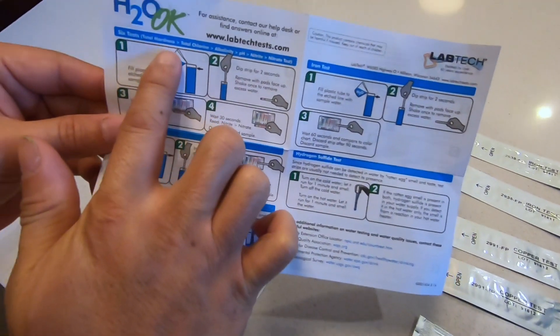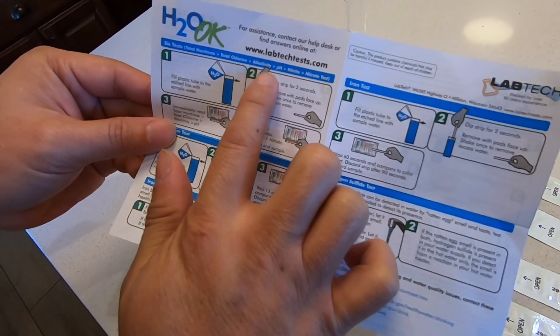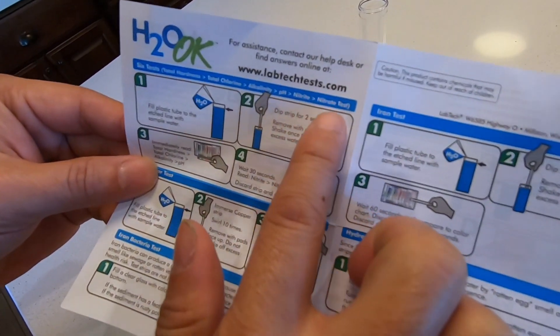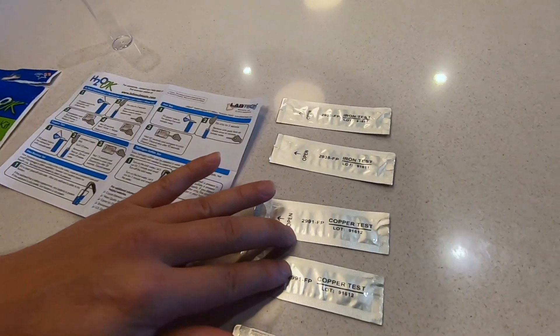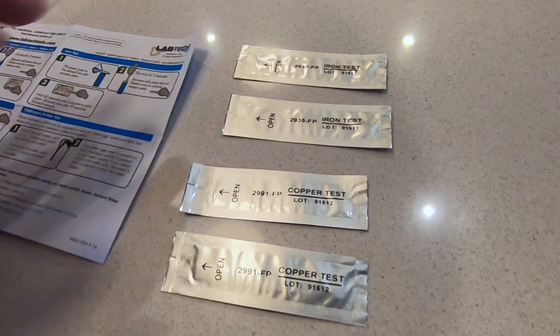It comes with two sets of six tests. The six test includes total hardness, total chlorine, alkalinity, pH, nitrite, nitrate, and then also the copper test. There's two copper tests and then two iron tests.